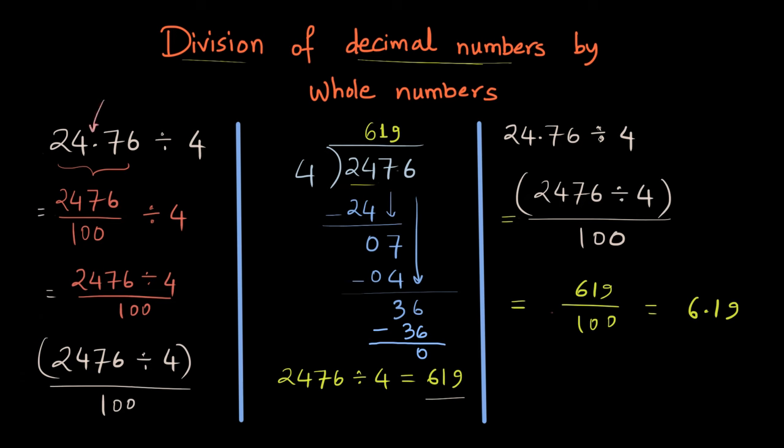Therefore we see that if we ignore the decimal point in the dividend, which was placed after 2 places from the right, then come back and put it 2 places from the right in our answer, we get the final result. Therefore, 24.76 divided by 4 is equal to 6.19.